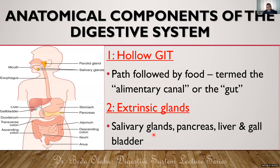In particular, the extrinsic organs refer to glands outside the wall of the GIT, like the salivary glands, pancreas, liver, and gallbladder. Today we'll be focusing largely on the hollow GIT, and next week we'll focus on the exocrine glands.